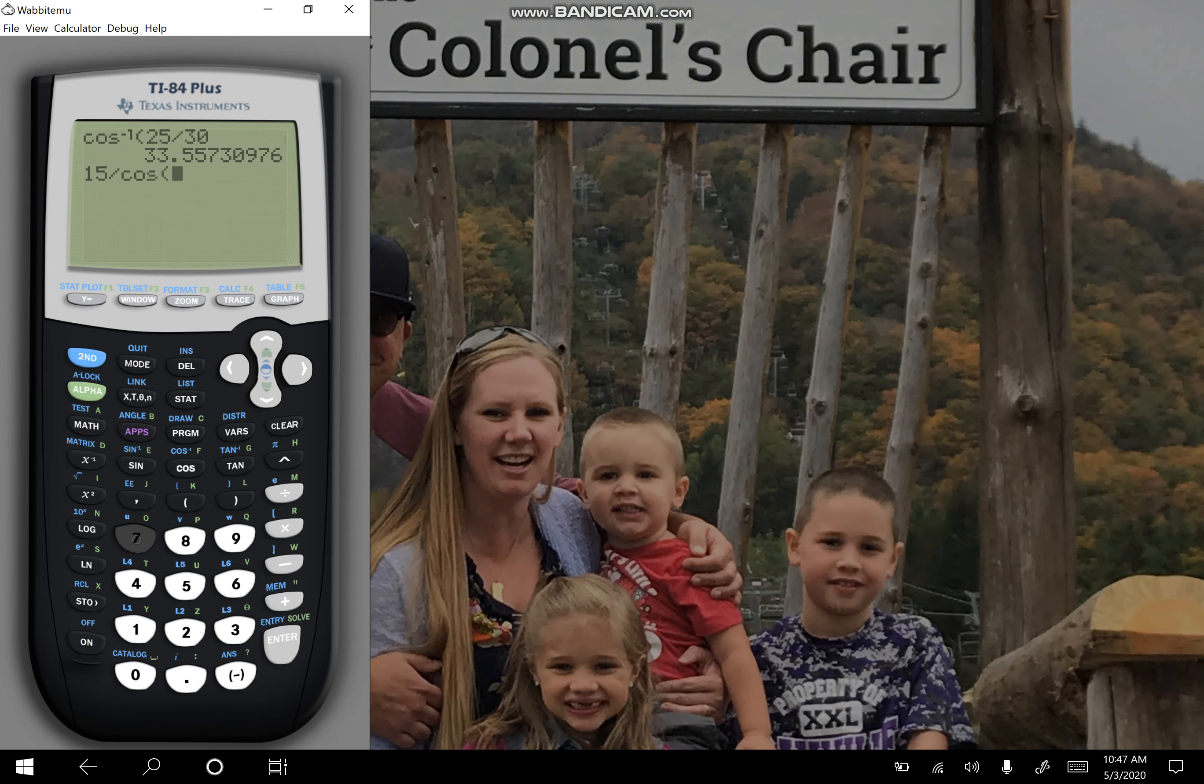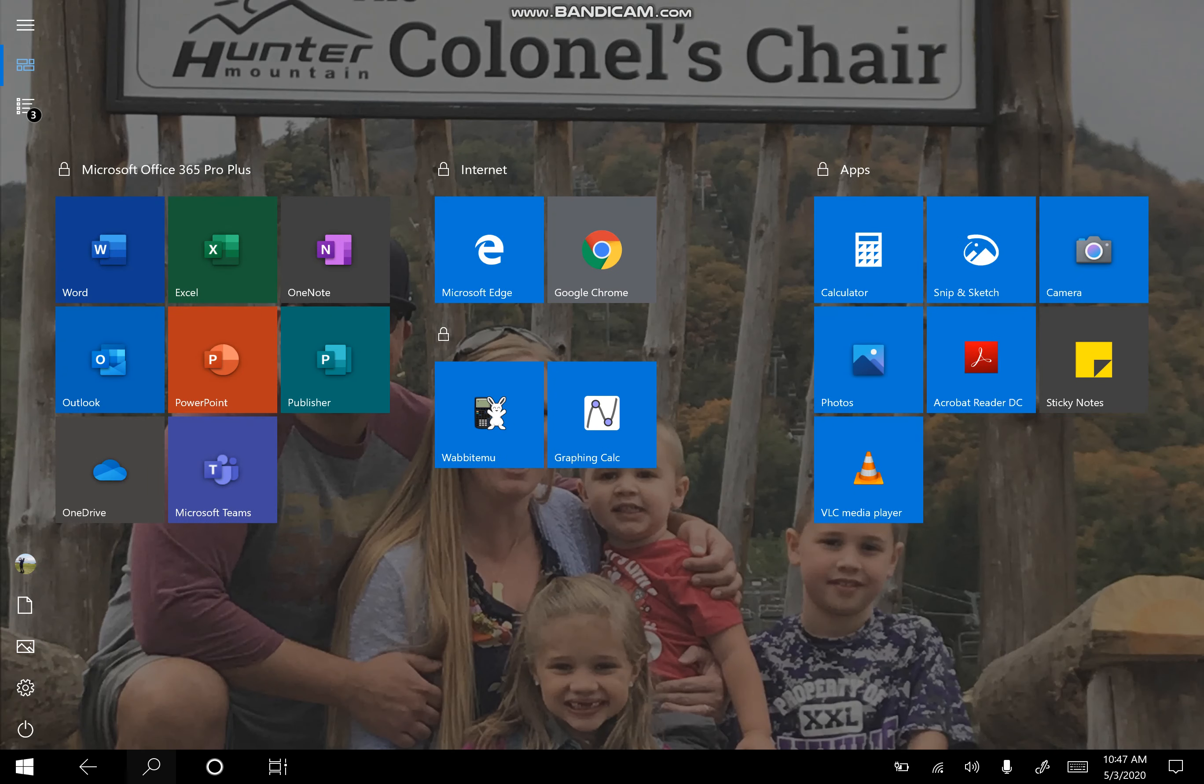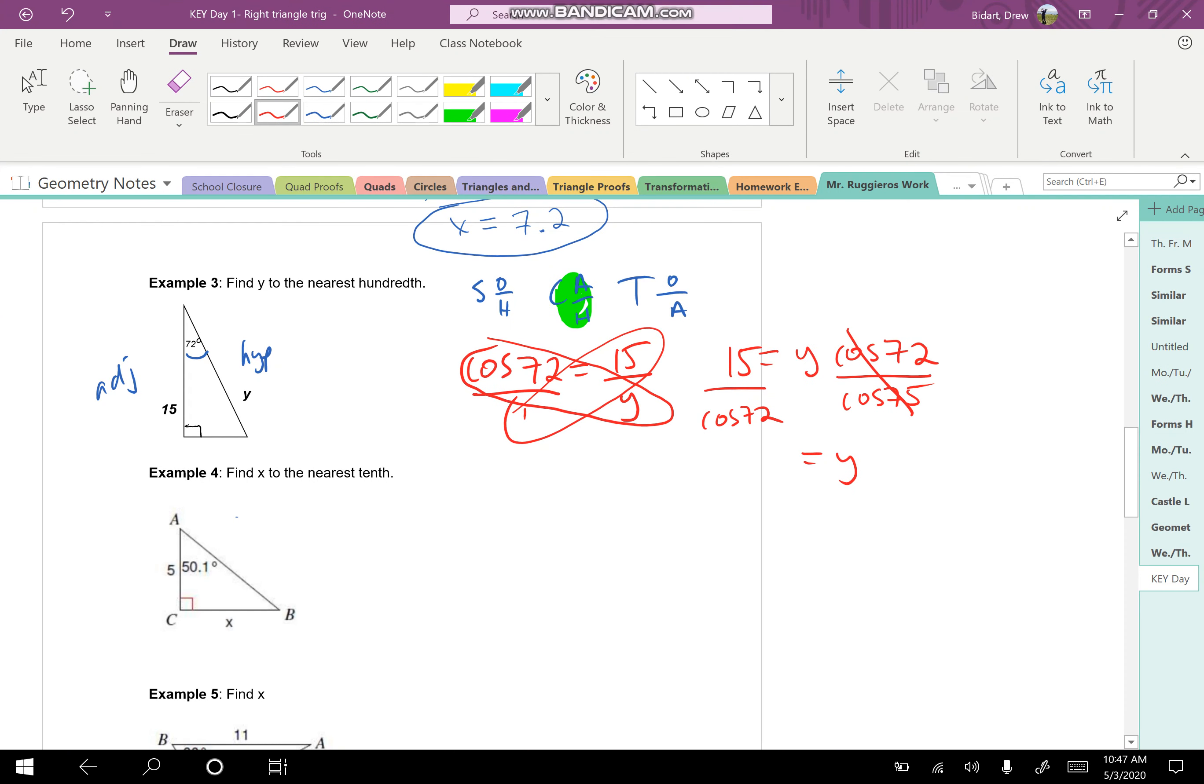So let's take 15 divided by the cosine of 72, and that should be about 48.54. And we'll round that. They want that to nearest hundredth, so we should be all set. 48.54.